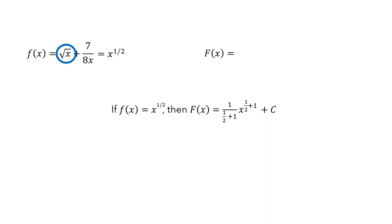Using this rule, we would have 1 over (1/2 + 1) times x to the (1/2 + 1). This will be the first term in the antiderivative, and we can rewrite 1/2 + 1 as 3/2. We'll save the plus c for the end.